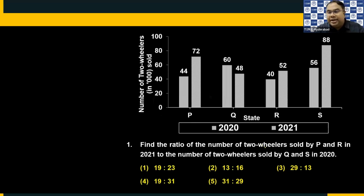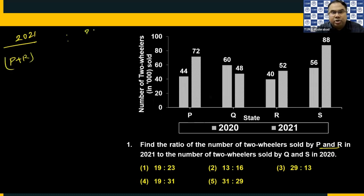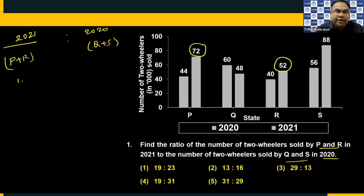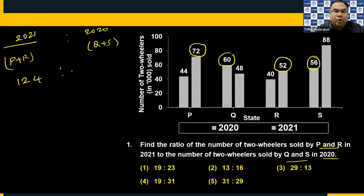Question number one: Find the ratio of number of two wheelers sold by P and R in 2021 to Q and S in 2020. P plus R in 2021 (second bar): 72 plus 52 equals 124. Q and S in 2020 (first bar): 60 plus 56 equals 116. So the ratio is 124:116, which simplifies to 31:29.